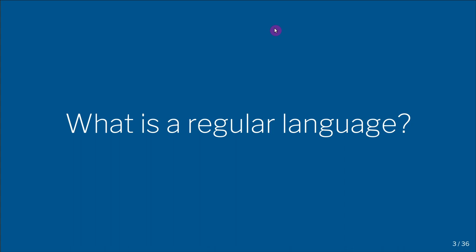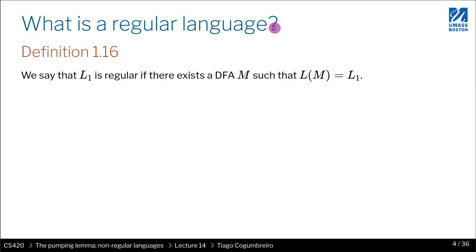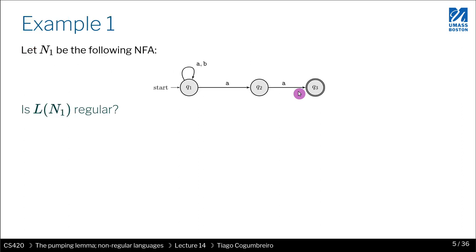So what is a regular language? If you go to the book, definition 1.16, which is right in the beginning, a regular language is defined if you have an automaton M that describes that language. That is to say that you have some automaton such that the language it recognizes is equivalent to the given language that you want to show is regular.